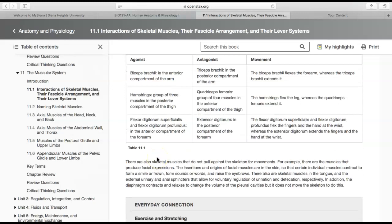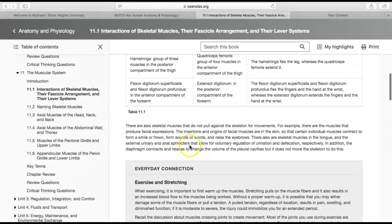The last thing I want to talk about in this section is that there are also skeletal muscles that do not pull on the skeleton for movements. The example is the muscles in your face that produce facial expressions—those muscles are actually attached directly into the skin. That's pretty interesting because normally they're attached to bone, but if you're smiling or frowning, those muscles are attached directly to the skin.